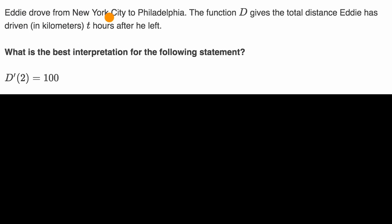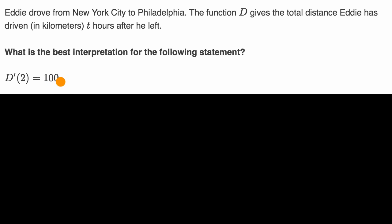We're told that Eddie drove from New York City to Philadelphia. The function d gives the total distance Eddie has driven in kilometers t hours after he left. What is the best interpretation for the following statement? d prime of two is equal to 100. Pause this video and try to write it out — what do you think this means? Be sure to include the appropriate units.